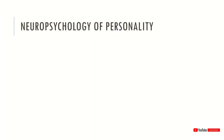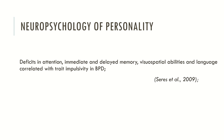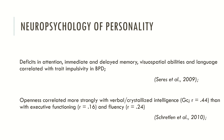Several studies explore the correlates between neurocognitive function and personality traits. For example, deficits in attention, immediate and delayed memory, visual-spatial abilities and language correlated with the trait of impulsivity in borderline personality disorder. Openness to experience correlates more strongly with verbal crystallized intelligence than with executive function and fluency. These are just two examples of a very strong body of research exploring neural correlates between neurocognitive abilities and personality traits.